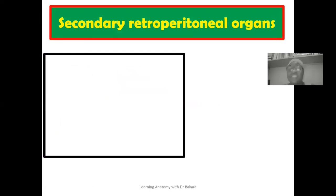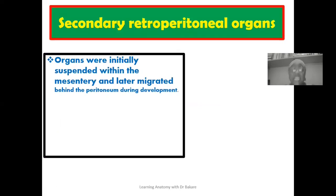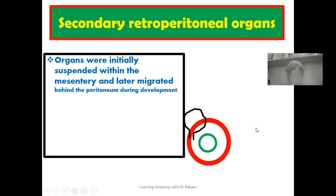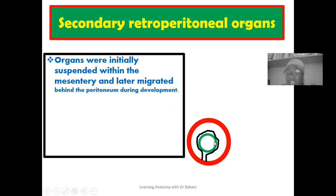A secondary retroperitoneal presentation is different. For secondary retroperitoneal organs, they were initially intraperitoneal organs, meaning they were embedded or enclosed by peritoneum. The peritoneum covers or encircles the organ, and you see the emergence of the mesentery at one end, which connects the organ to the body wall. This initial kind of presentation is an intraperitoneal presentation.